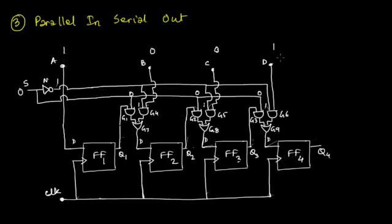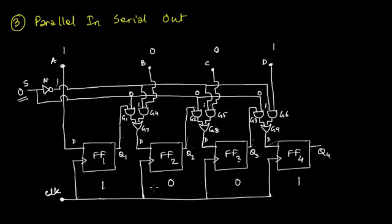Whenever we have this data and line S is set to logic 0, then with the application of one clock pulse, the data is taken together from all four lines A through D into the corresponding flip-flops. So after one clock pulse, each of flip-flops 1 through 4 would store the data 1 0 0 1. Q1 would be 1, Q2 would be 0, Q3 would be 0, and Q4 would be at logic 1. That's how you take the data as a parallel input.